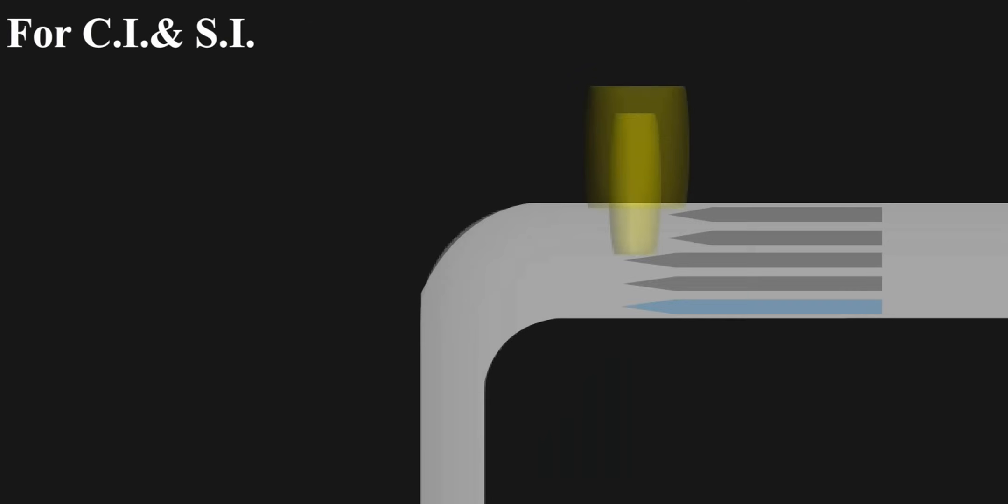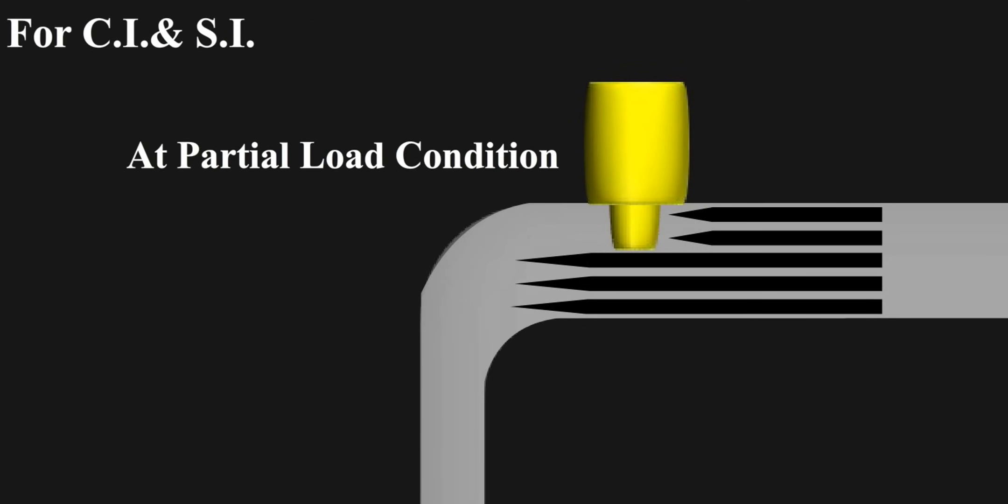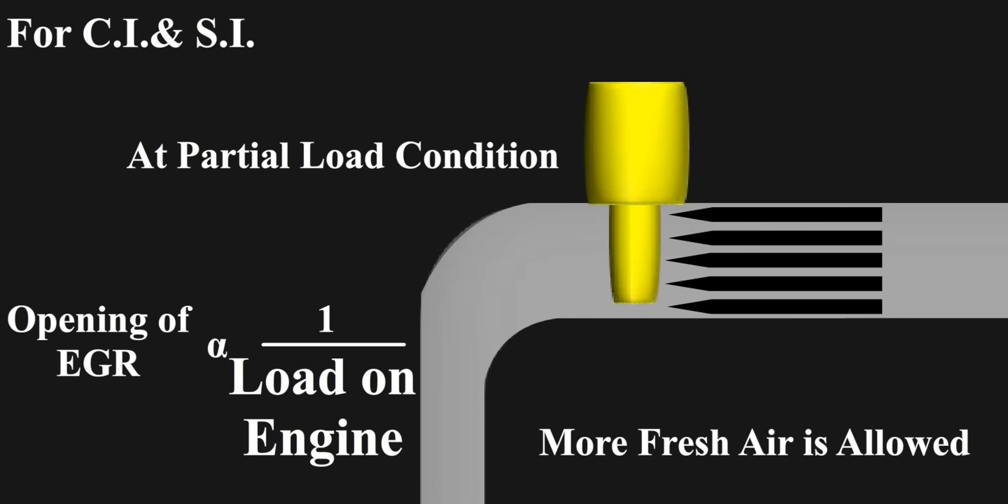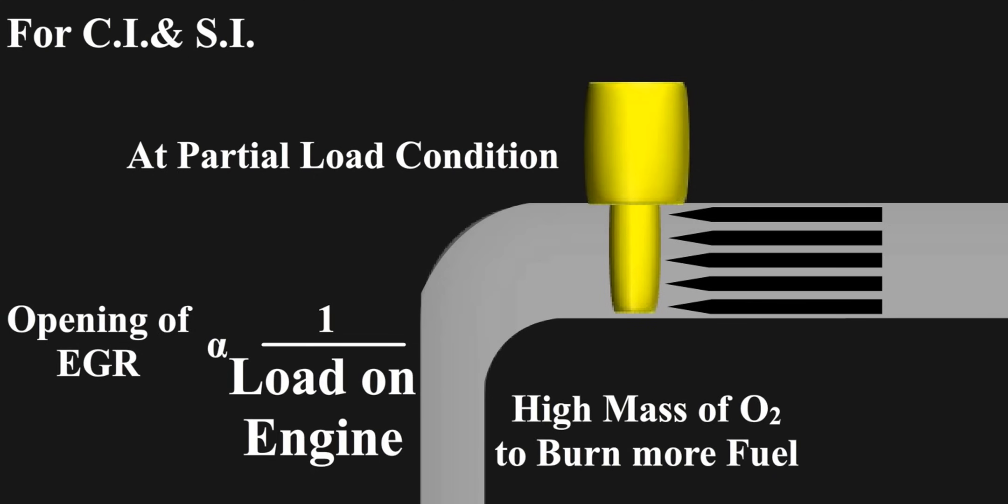For both CIs and SIs, at partial load condition, the opening of EGR is inversely proportional to the load on engine. As the load increases, more fuel is needed to burn. So, it requires more oxygen, hence mass of exhaust recirculated is decreased and more fresh air is allowed. At heavy loads or at acceleration, the EGR valve is closed to ensure high mass of oxygen to burn more fuel and hence get more torque and power.